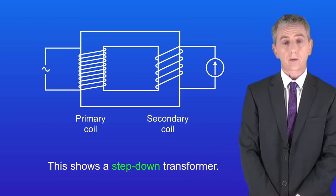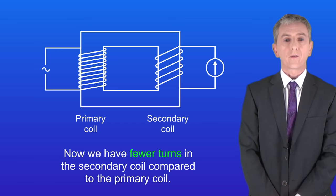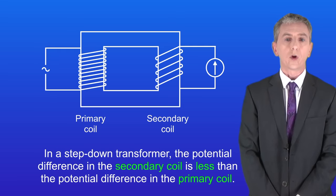I'm showing you here a step-down transformer. Here we've got fewer turns in the secondary coil compared to the primary coil. In a step-down transformer, the potential difference in the secondary coil is less than the potential difference in the primary coil.